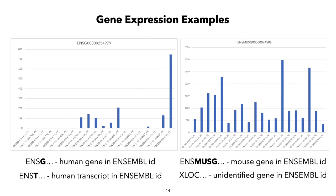In our examples, we use a table that includes names like ENSG, which stands for a human gene in the Ensembl format. ENST stands for a human transcript in the Ensembl ID. ENSMUSG stands for Mus musculus or mouse gene. XLOC stands for an unannotated transcript identified through Cufflinks and CuffMerge.